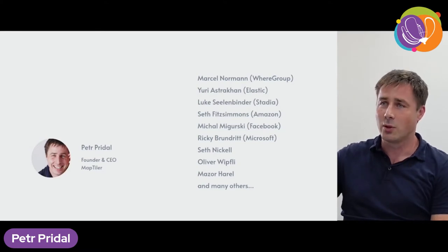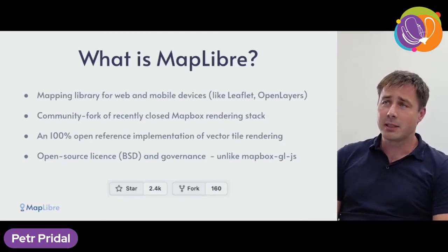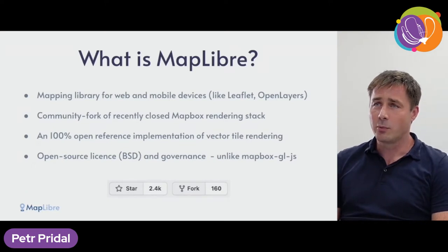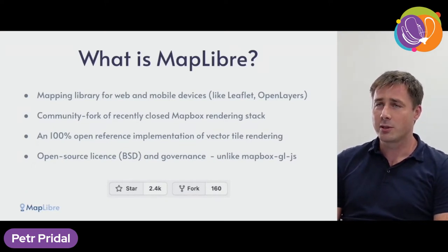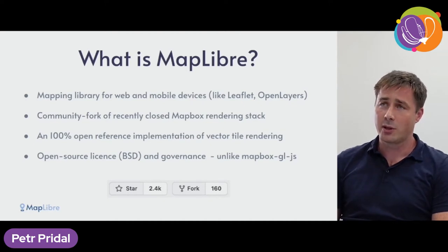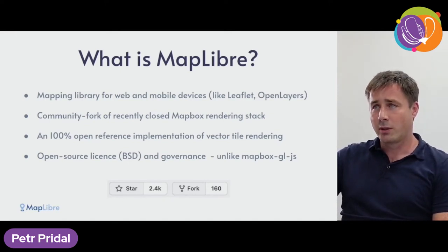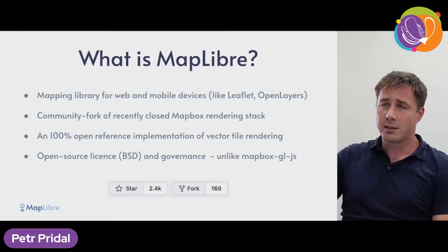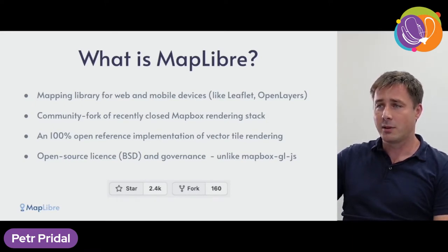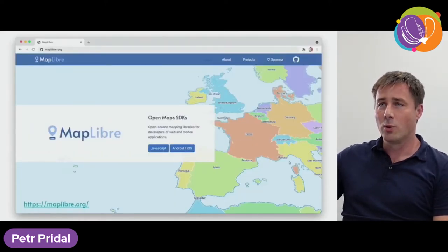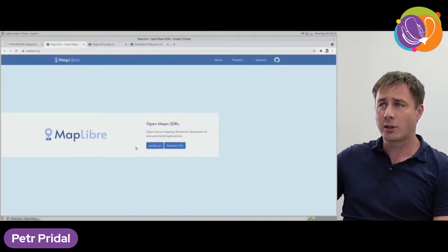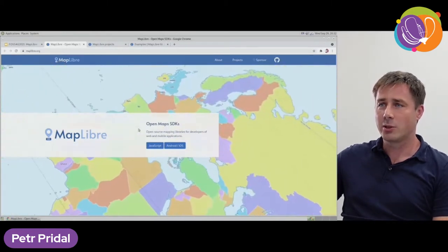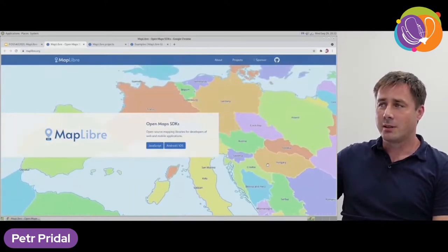MapLibre is a mapping library for web and mobile devices, quite similar to Leaflet and OpenLayers. It's a community fork of the recently closed-source MapBox rendering stack, with a 100% open source implementation of vector tile rendering. It remains open source with open source governance. It's quite a popular project despite being alive only since December. You can find out more at maplibra.org.